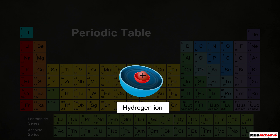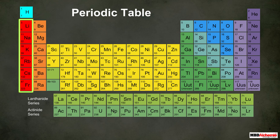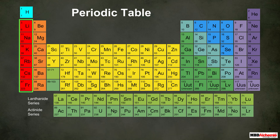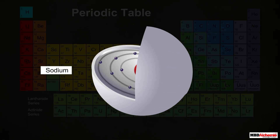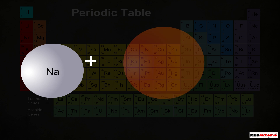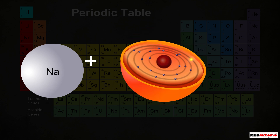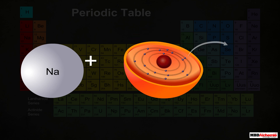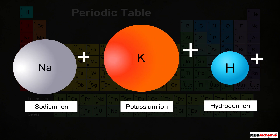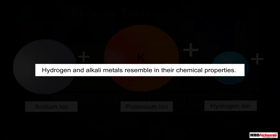Hydrogen can lose its only electron to form a unique positive ion, that is, the hydrogen ion. In a similar manner, alkali metals also lose their valence electron to form uni-positive ions. For example, the sodium atom loses its valence electron to form a sodium ion, and the potassium atom loses its valence electron to form a potassium ion.